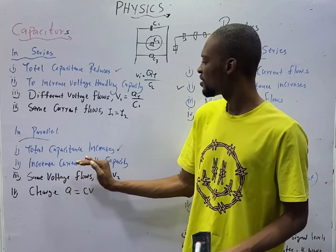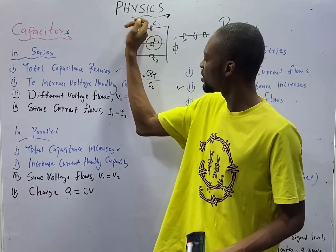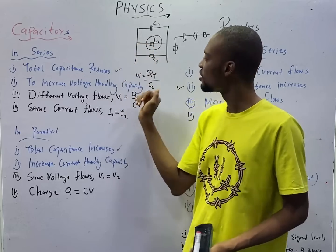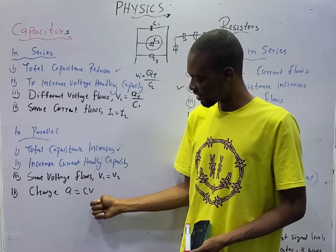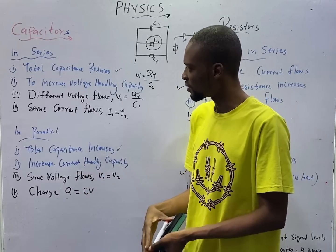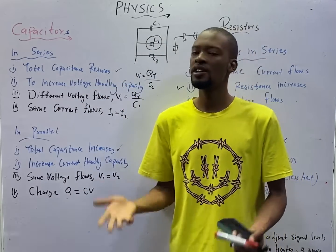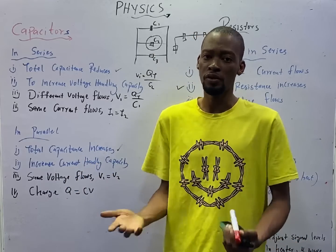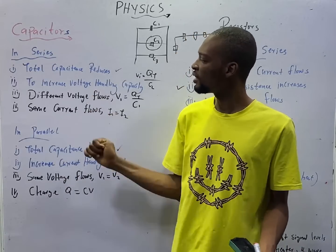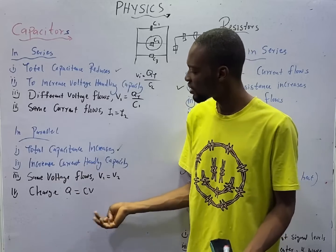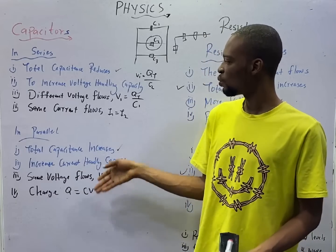V = Q/C because charge Q = CV. For parallel capacitors, there is an increase in current and the same voltage flows. Voltage across the first capacitor equals voltage across the second, equals voltage across the third, and so on. The charge is capacitance times the voltage: Q = CV. So for capacitors in series, the aim is to increase available voltage while current remains constant. For parallel capacitors, the aim is to increase current; voltage remains the same and total capacitance increases.